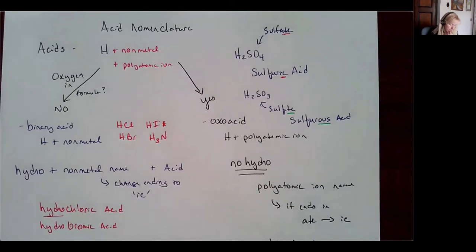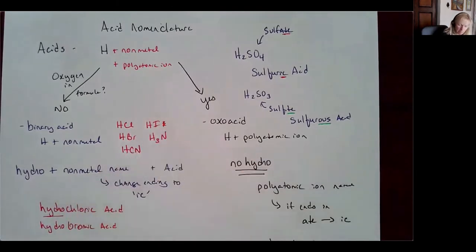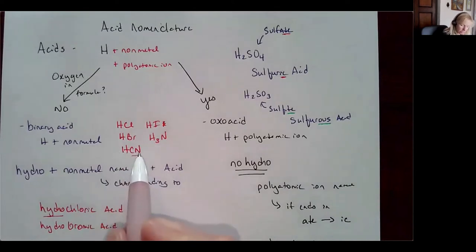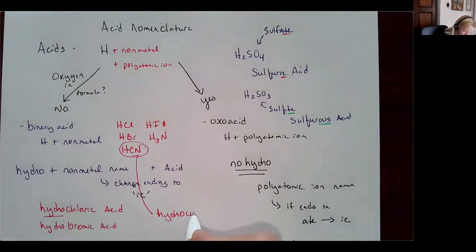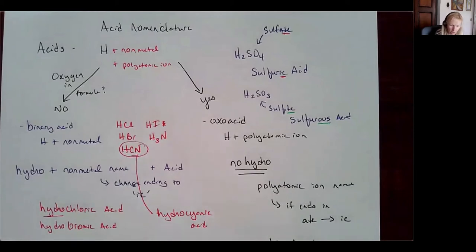There are some exceptions. HCN is not necessarily a binary acid because CN is a polyatomic ion, but there's no oxygen. So this would be an exception and would be named hydrocyanic acid, because CN is the cyanide polyatomic ion. There are a couple of exceptions to acid nomenclature.